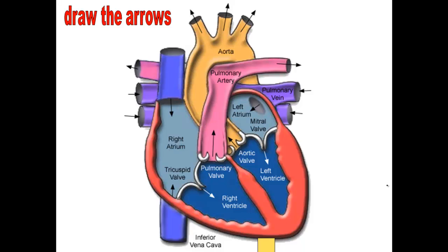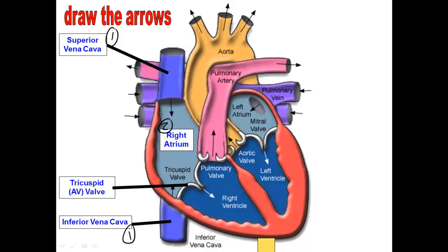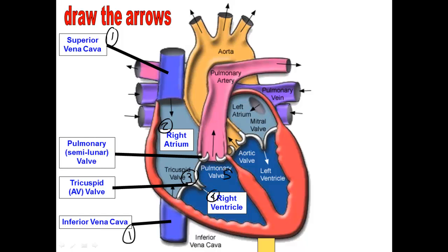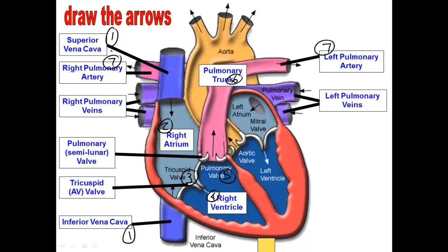Let's look at this heart and figure out the order as blood moves through it. We start at: 1) the superior vena cava and inferior vena cava, which both bring blood into 2) the right atrium, which pushes it through 3) the tricuspid valve, into 4) the right ventricle, which presses through 5) the pulmonary valve, into 6) the pulmonary trunk, and then into 7) the left and right pulmonary arteries. The blood heads to 8) the lungs — the left lung and the right lung — where it gets fresh oxygen. We're now changing from blue deoxygenated blood to red oxygenated blood.